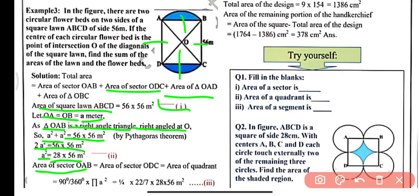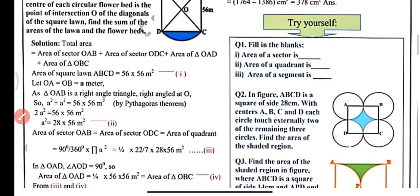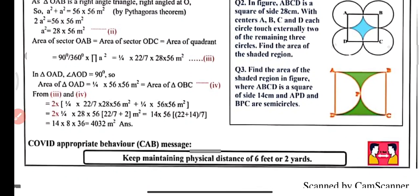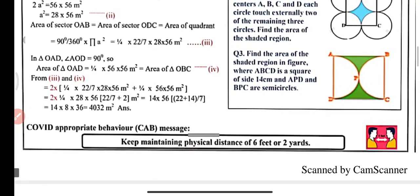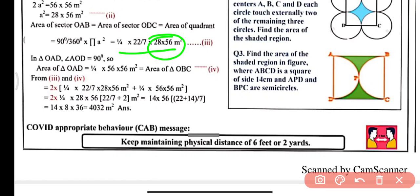Area of sector OAB = area of sector ODC = area of a quadrant = (90/360) × π r² = (1/4) × (22/7) × A², where A² = 28 × 56 m². In triangle OAD, angle AOD = 90°, so area of triangle OAD = (1/4) × 56 × 56, which also equals the area of triangle OBC. After simplifying all four parts, the required total area = 4032 m².